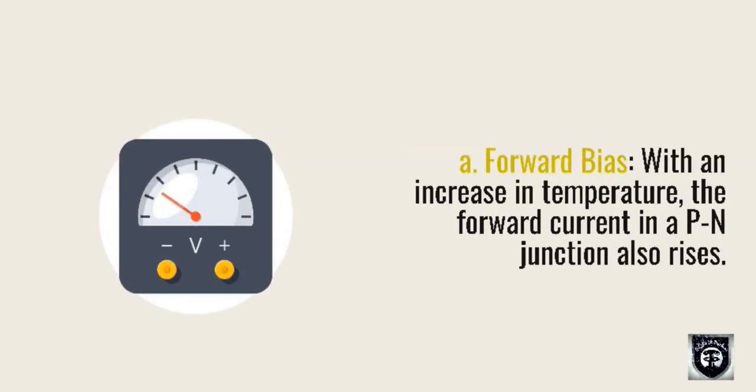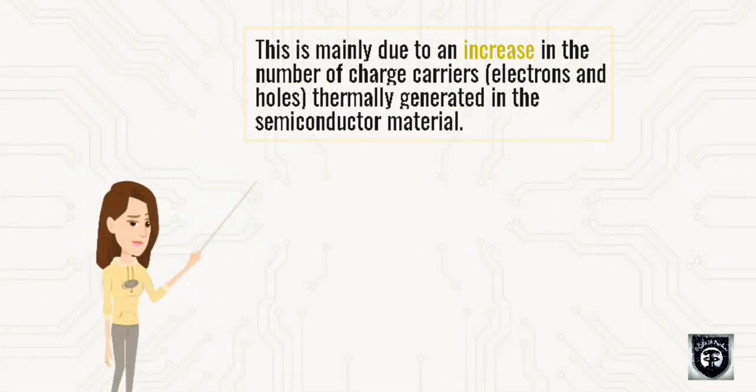Forward bias: With an increase in temperature, the forward current in the P-N junction also rises. This is mainly due to an increase in the number of charge carriers, electrons and holes, thermally generated in the semiconductor material.